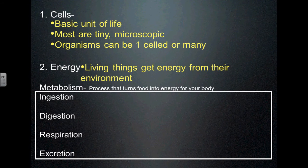Where do we get our energy from if we can't make it ourselves? Jacob said the sun, but we can't get it directly from the sun — we'll talk about that later. We get our energy from the food that we eat. Let's say you just ate some popcorn chicken during lunch — that's food, you're obtaining energy from that. The first step in that is ingestion. What does that mean? Anna said eating — yeah, taking in food. So during lunch you ingested some of those popcorn chicken bites, and that's what you're going to be using as your energy for the next couple of hours.